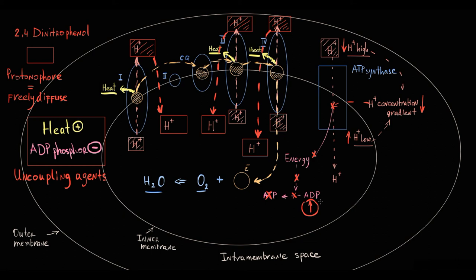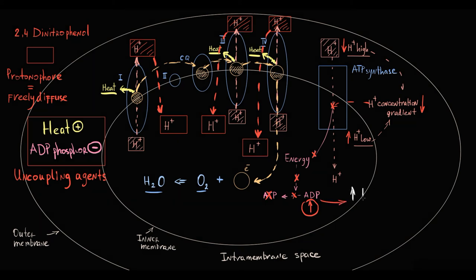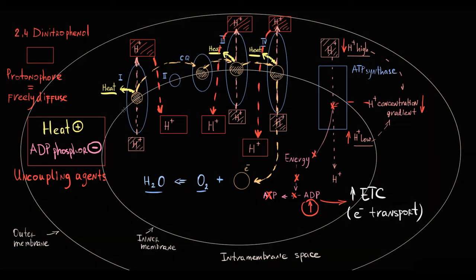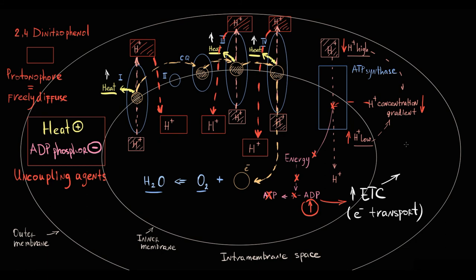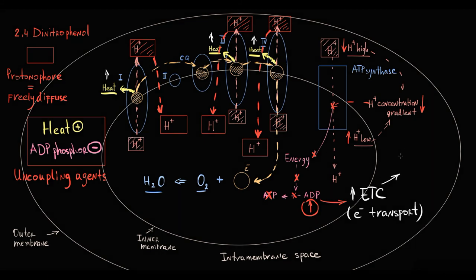So, to increase energy production, electron transport chain increases the rate of electron transportation. ATP production will be still insufficient due to dinitrophenol action, but heat generation will markedly increase. Because the faster electron transport chain is working, the more electrons are consumed, the more heat is generated, so this will cause hyperthermia.